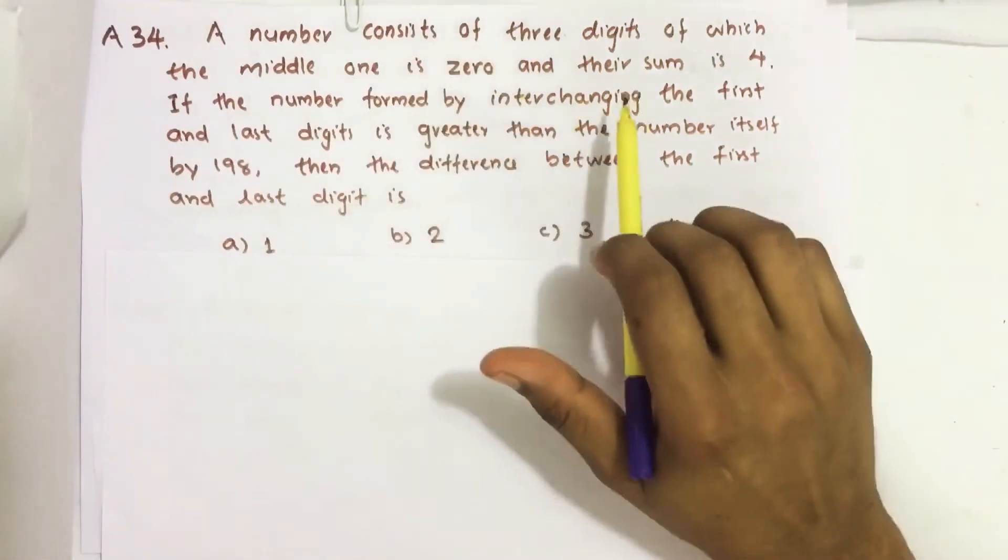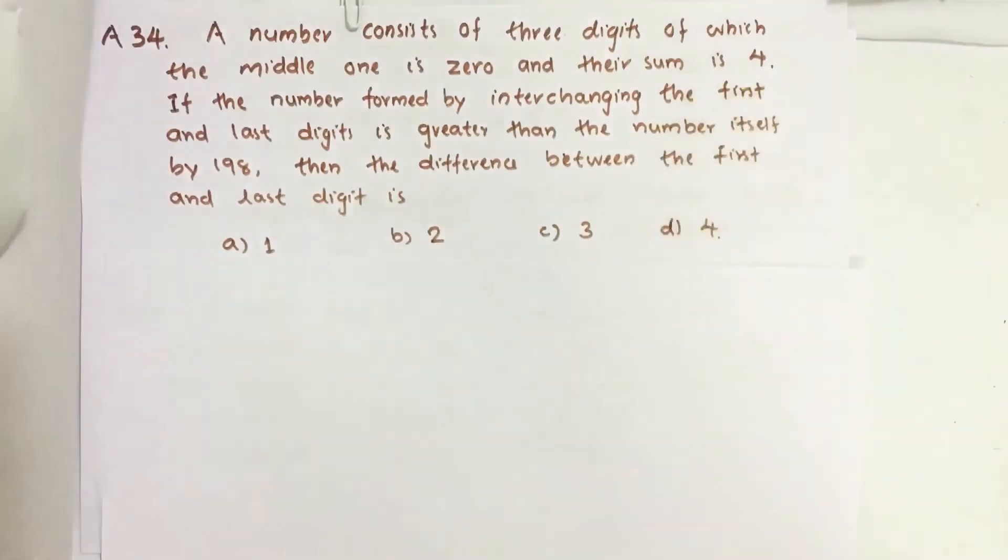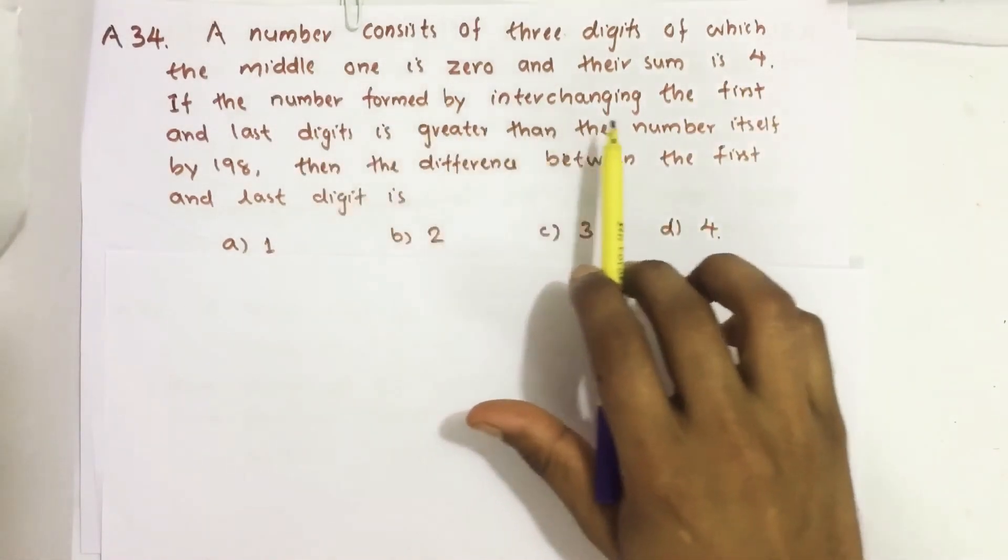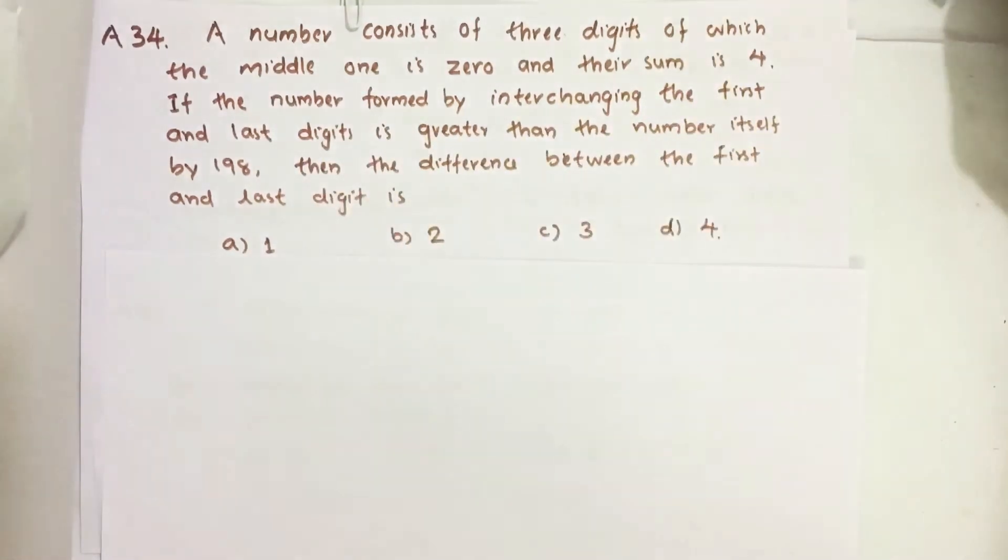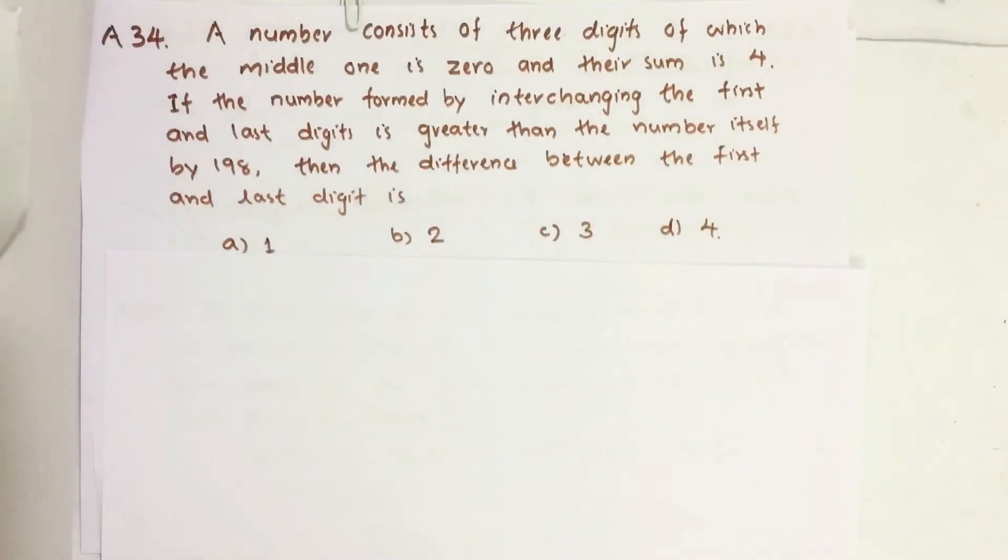A number consists of 3 digits, of which the middle one is 0 and their sum is 4. If the number formed by interchanging the first and last digit is greater than the number itself by 198, then the difference between the first and last digit is...